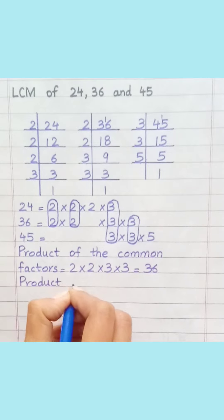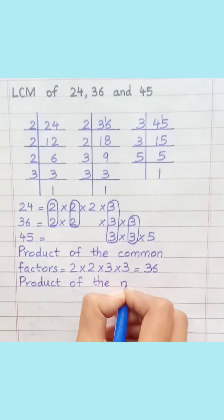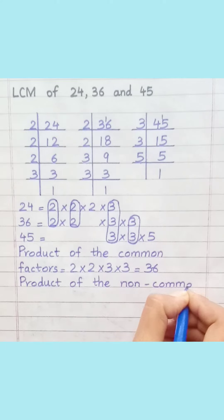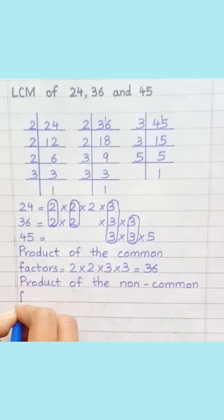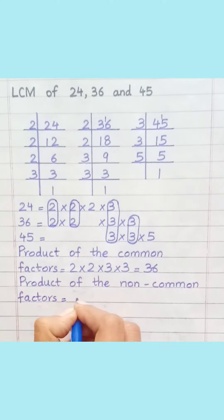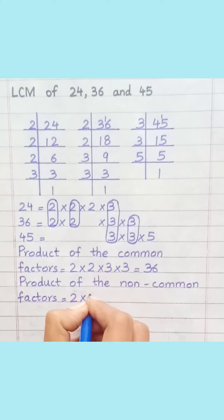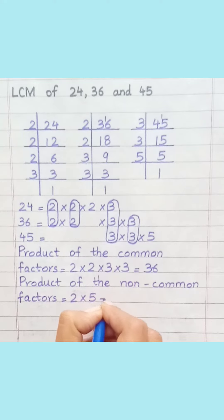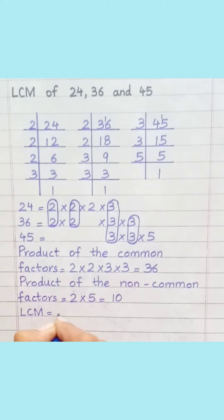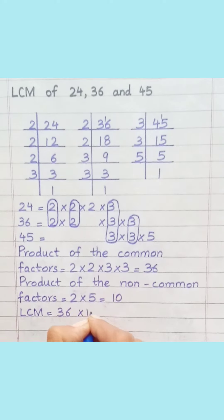Product of the non-common factors: equal 2 multiply 5, equal 10. LCM equal 36 multiply 10, equal 360.